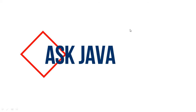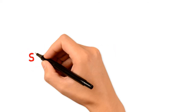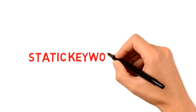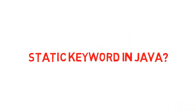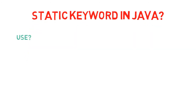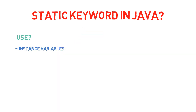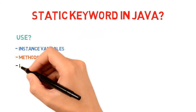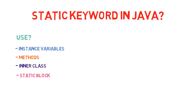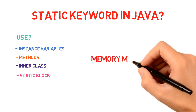Hi guys, welcome to another question of our Java series. In this video we'll see what is the static keyword in Java and why do we need it. Basically we use static with instance variables, methods, inner classes, and static blocks. We're going to see every part in detail in upcoming videos, but in this video let's understand the higher level purpose of the static keyword.